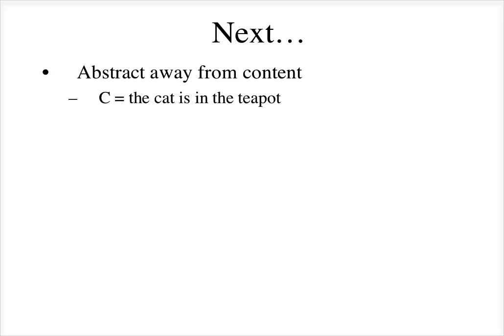Next, we want to abstract away from the content so we can just look at the form. We're going to do some abbreviations. C will stand for the statement 'the cat is in the teapot,' and G will stand for the statement 'the gerbil is in the teapot.'